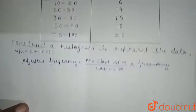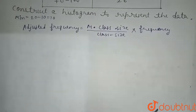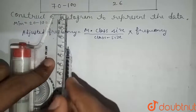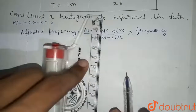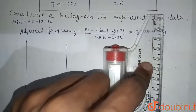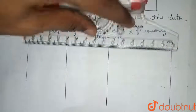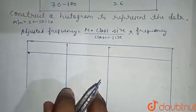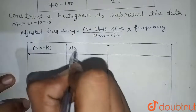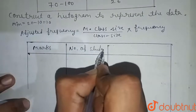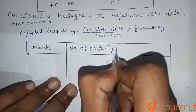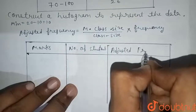Now we'll use this formula to compute the adjusted frequency for all the given data. I'm making a table here with three columns: one for the marks, one for the number of students, and one for the adjusted frequency.